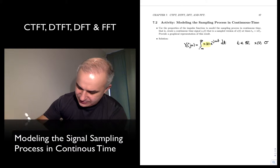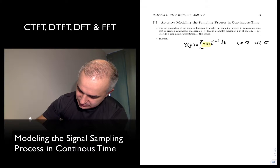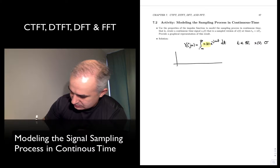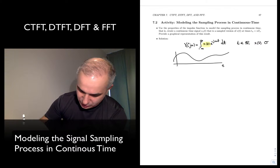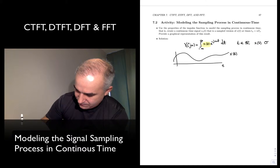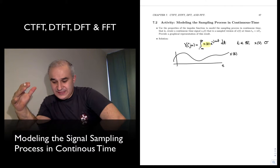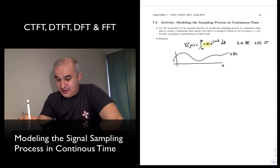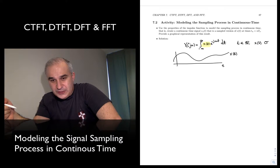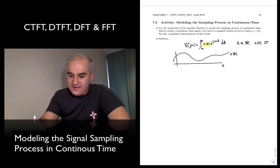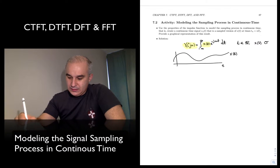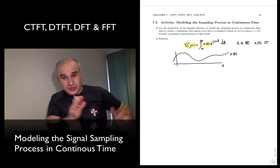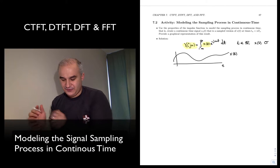Consider a signal x(t) — that's a continuous time signal. If we have a mathematical expression for it, we can plug it into our continuous time Fourier transform and find the spectrum as a function of omega. That's the first requirement: continuous time, with a mathematical expression for it.